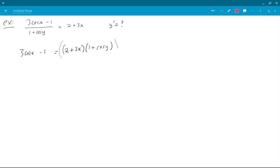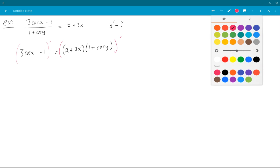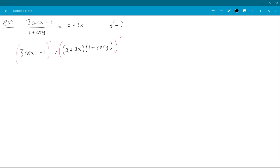So I prime both sides. And what do I get? On the left-hand side, I get minus 3 sin x is equal to product rule. So f prime is 3